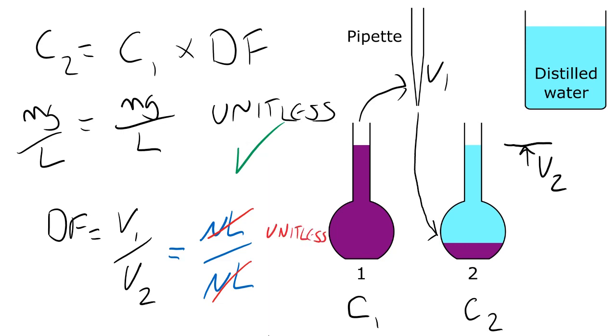So the two important things to notice here are that providing you measure the aliquot volume and the flask volume in the same units, when you calculate the dilution factor that will end up being unitless, which is what you want. And then when you multiply that by the original concentration, that means the final concentration you will get for the second flask will end up having exactly the same units as the initial concentration.